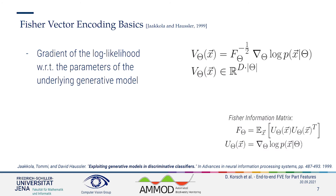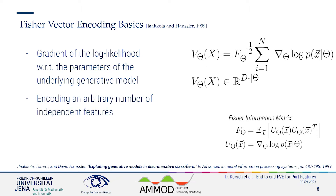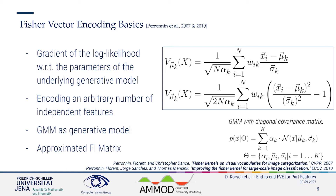Formally, the Fischer vector encoding is defined as a gradient of the log likelihood with respect to the parameters of the underlying generative model P. If we further assume independence of the encoded features, we can just sum up over these gradients and the resulting encoding does not change in dimensionality. If we further assume that our generative model is a Gaussian mixture model with diagonal covariance matrices and approximate the Fischer information matrix as proposed by Peronin et al., we end up with the following formulation of the Fischer vector encoding.